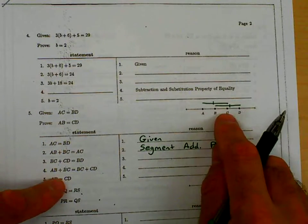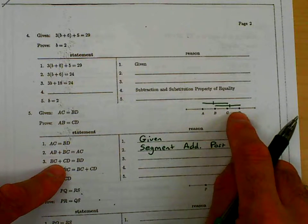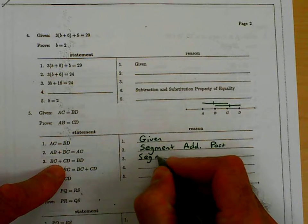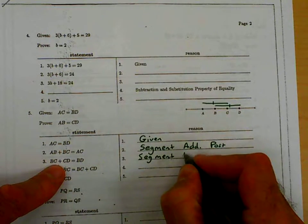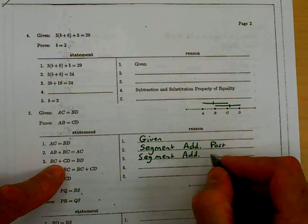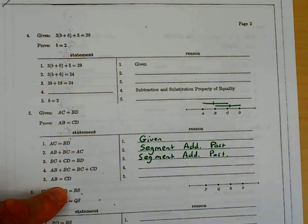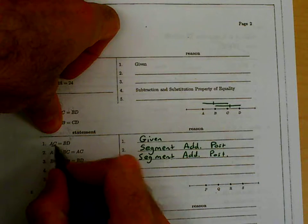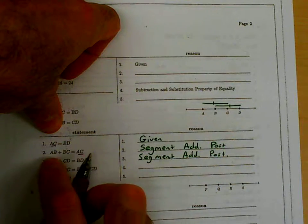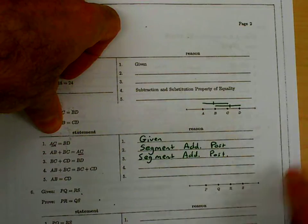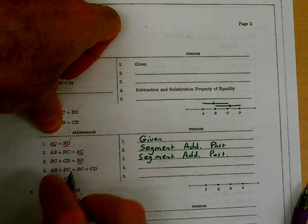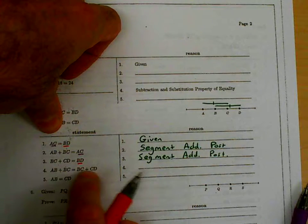And they do the same thing with the second one. BC plus CD equals all of BD. That's segment addition postulate. And then we have, we go ahead and we substitute in. We're substituting in AC is here, AC is here. We're going to go ahead and substitute this for AC. We're going to substitute that for BD. That's how we get this.